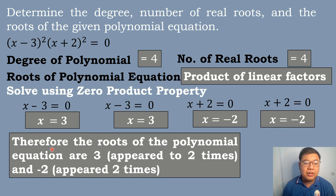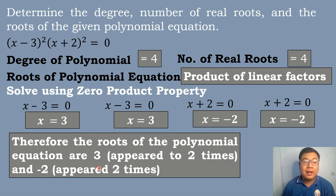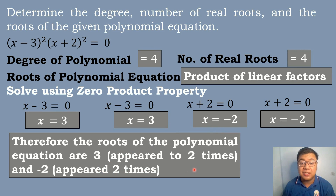Therefore, the roots of the polynomial equation are 3, which appeared two times, and −2, which appeared two times, or has multiplicity two.